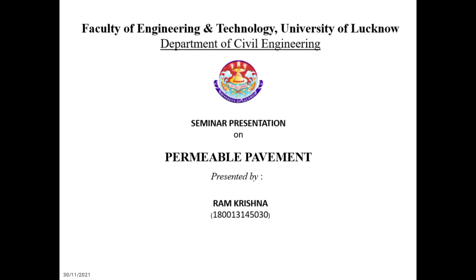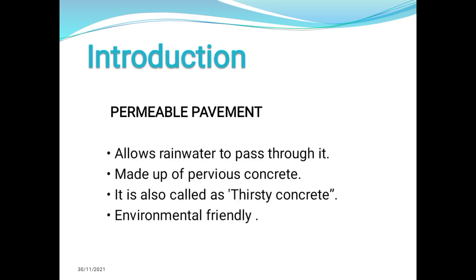During the next few minutes, please pay attention to the topic. By the end of this talk, you will be familiar with what permeable pavement is. My first point concerns the introduction of permeable pavement. It allows rainwater to pass through it and is made up of pervious concrete. Pervious concrete is made using large aggregates with little to no fine aggregates. Concrete paste then coats the aggregate and allows water to pass through the concrete slab. It is also called thirsty concrete and it is environmentally friendly too.